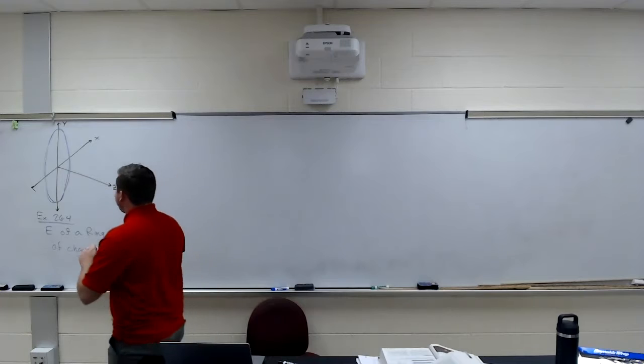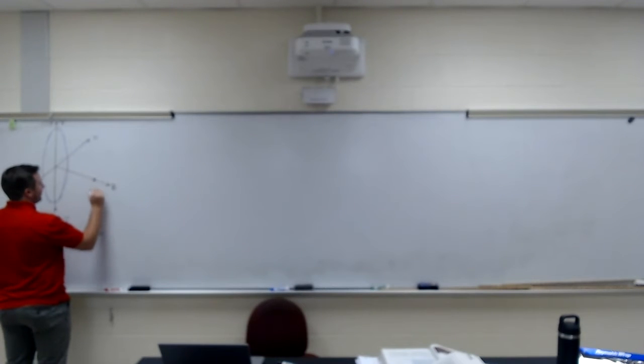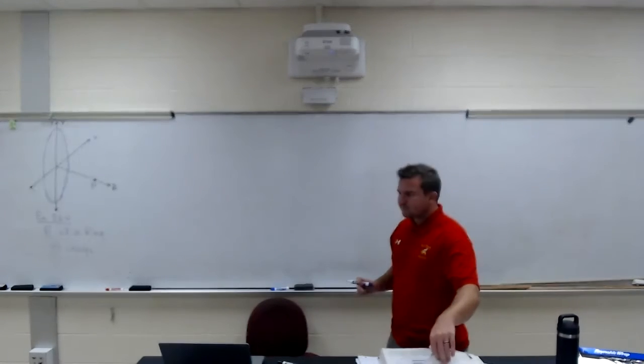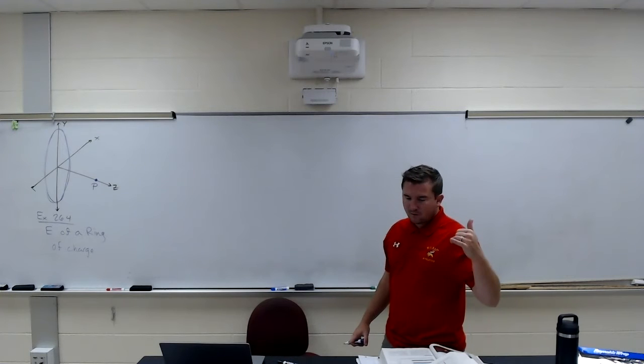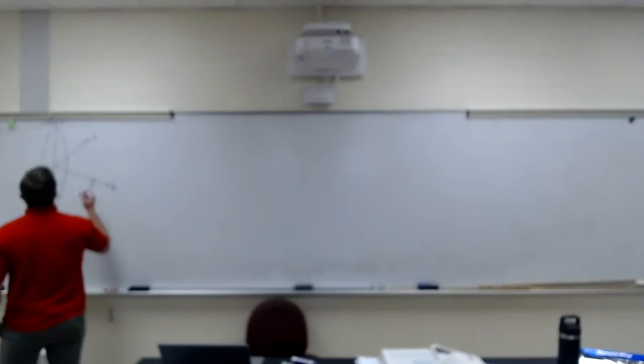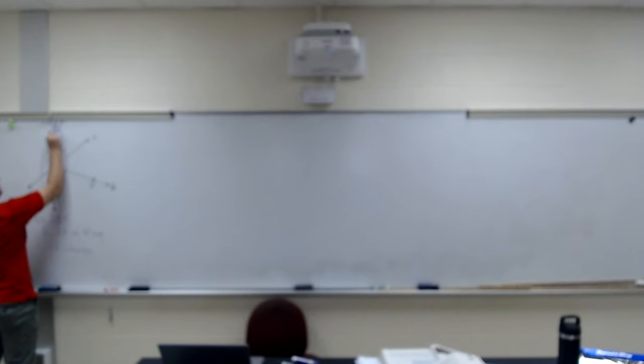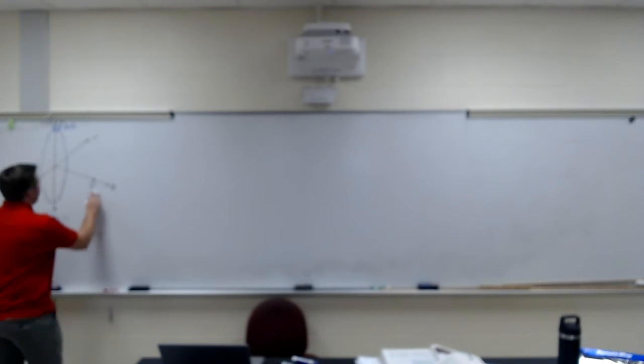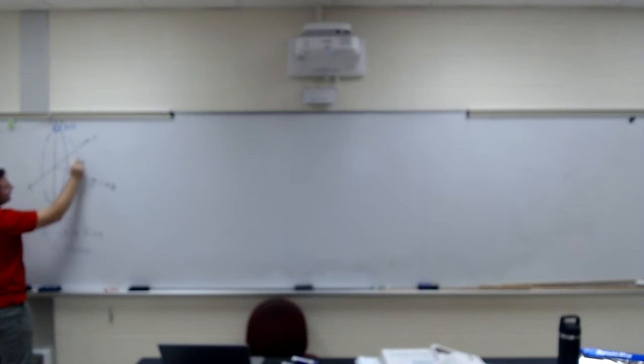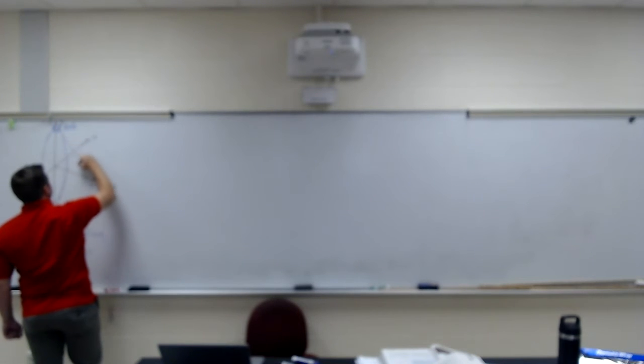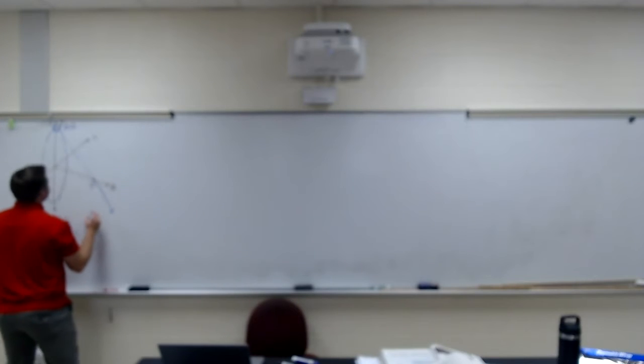A second step is to pick a point P where we're going to talk about the field. So I'll pick a point P right here. That's where we want to figure out what the strength of the electric field is. And then from there, we're going to divide the total charge into pieces. So I will take a piece of this circle here. I'm going to pick the top. That's going to be my delta Q. There is my electric field.